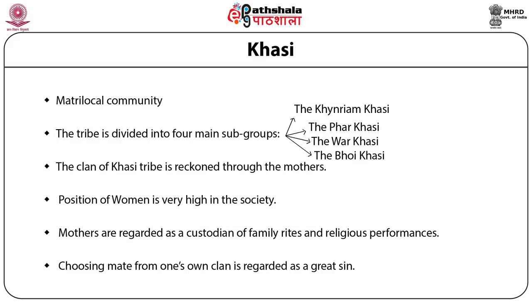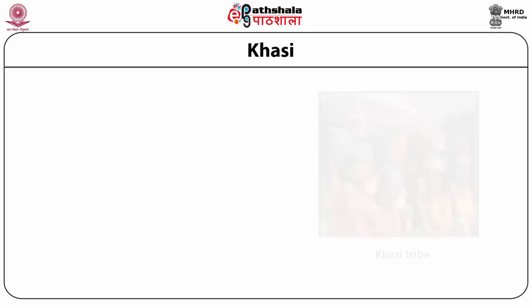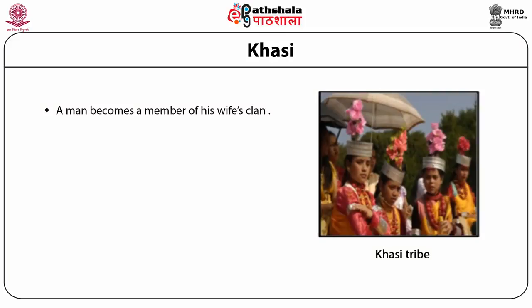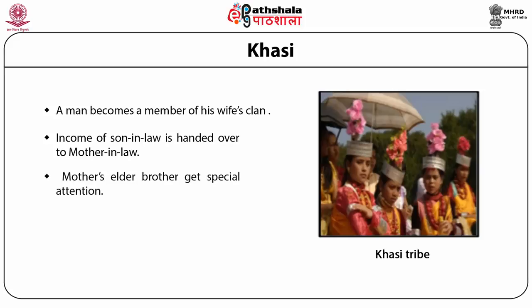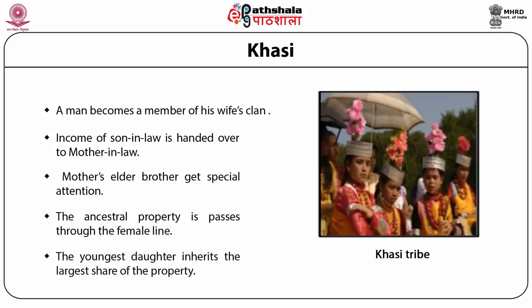The levirate does not obtain in Khasi society. A man becomes a member of his wife's clan and lives in her own house. The income of the son-in-law is handed over to the mother-in-law for family maintenance. All sons leave their family of orientation after marriage. The mother's elder brother gets special attention, and management is under his control. Ancestral property passes through the female line; the youngest daughter inherits the largest share, and sons have no right to property.